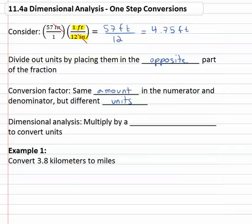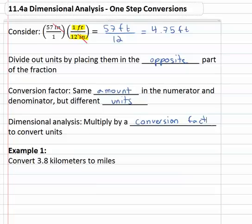This process of dimensional analysis says we will convert by multiplying by a conversion factor—same amount, different units—to convert units.